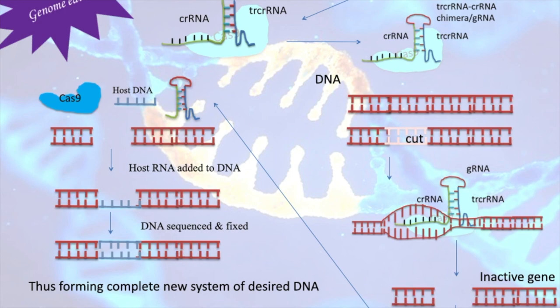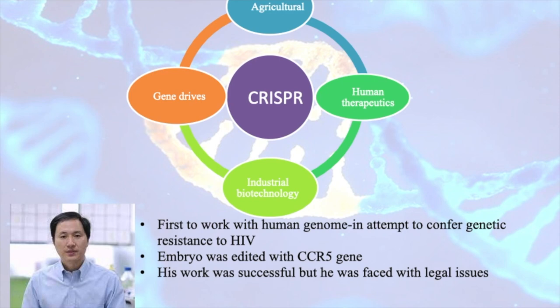CRISPR opens its application in various fields. In agriculture, you can produce fruits of big or small size using CRISPR. It also helps in human therapeutics and medication. It has applications in industrial biotechnology — as seen in the yogurt industry. It also relates to gene drives, where genes are altered in the offspring so similar genes are passed from one generation to the next.